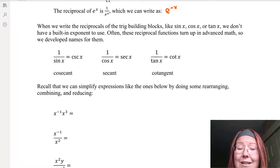1 over the cosine of x is written SEC of x. That stands for secant x. So 1 over cosine x is secant x.